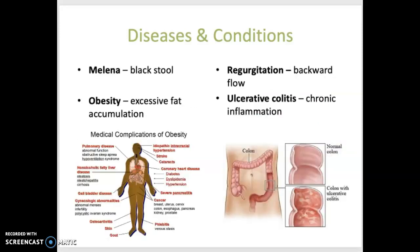Irritable bowel syndrome, or IBS, is a painful spastic colon which often leads to altered bowel function, and most often the cause is unknown. Melena is dark, almost black feces due to the presence of blood, caused by bleeding in the upper digestive tract — so bleeding in the esophagus or the stomach. Obesity is excessive fat accumulation. Morbid obesity is about 40 percent above average body weight, while normal obesity is about 20 percent above average body weight. Regurgitation means backward flow, often referring to the backward flow of food from the stomach into the mouth.